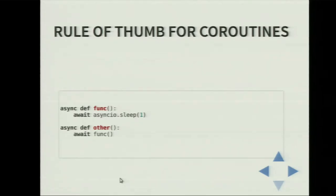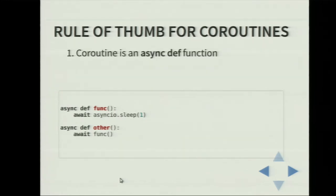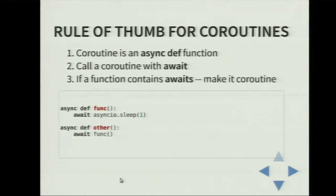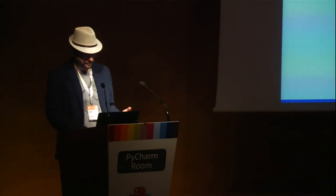I want to say a couple of words about coroutines. It's a really complex concept, but for the casual user it can be divided into very simple rules. A coroutine is a function which is not def but async def. If you see async def, it means you have a deal with a coroutine. If you have to call a coroutine, put the await keyword before the call — like await sleep or await function. And if your function contains await inside, it should be a coroutine itself, so the function itself should be async def also. That's it.